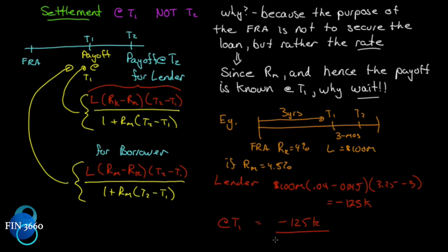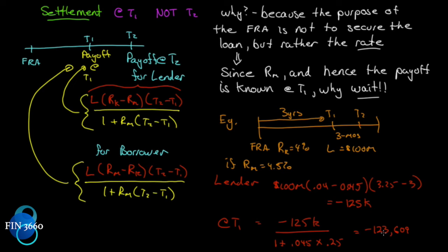The lender loses $125,000, but that's the payoff at t2. At t1, we discount that amount backwards three months: divide by one plus rm (0.045) times t2 minus t1 (0.25). This gives negative $123,609. So at t1, the lender transfers $123,609 to the borrower for having been wrong on the contract rate.